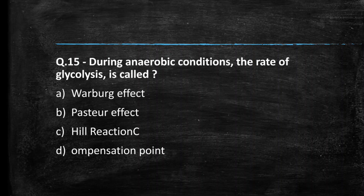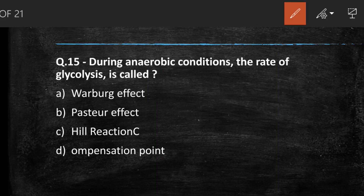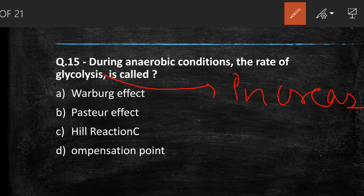Next question: during anaerobic conditions, the increase in the rate of glycolysis is called — (A) Warburg effect, (B) Pasteur effect, (C) Hill reaction, (D) Compensation point. The right answer is option B, the Pasteur effect. The increase in the rate of glycolysis in the absence of O₂ is due to the non-availability of those enzymes which are easily available in the presence of O₂, and it is known as the Pasteur effect.